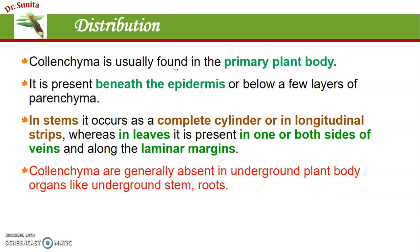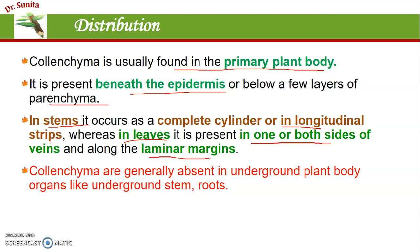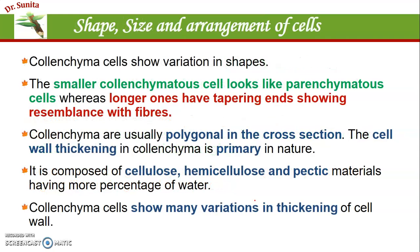Colenchyma is distributed all over the primary plant body. It may be present beneath the epidermis or below a few layers of parenchyma. In the stem it is present in a complete cylinder form or longitudinal strips; in leaves it is present in the midrib region on both sides or in the laminar region. Colenchyma is mostly absent in underground parts of the plant body, since mechanical strength is less needed there.